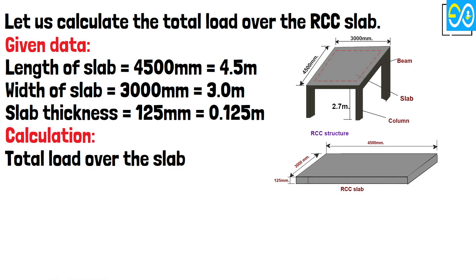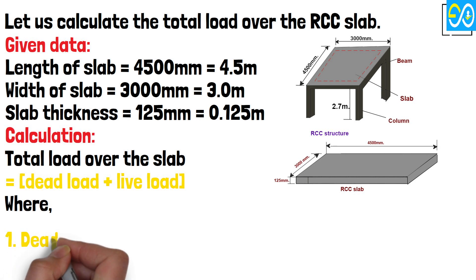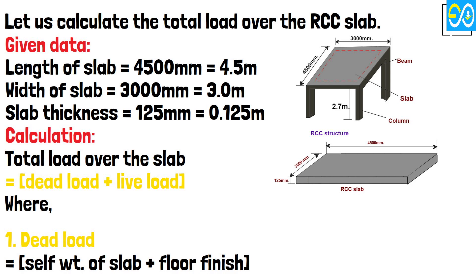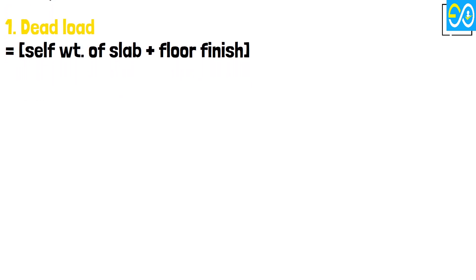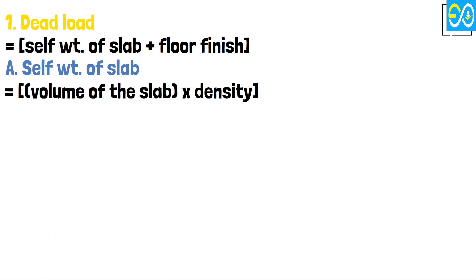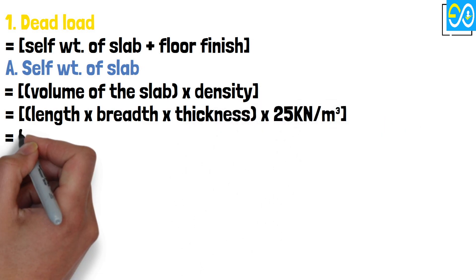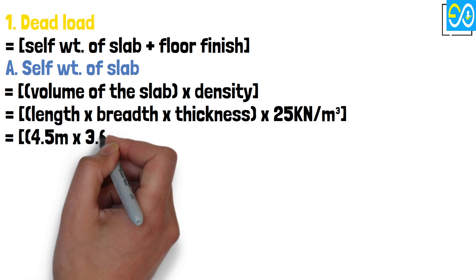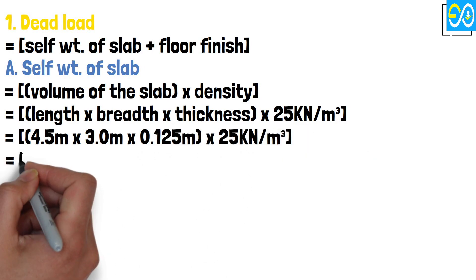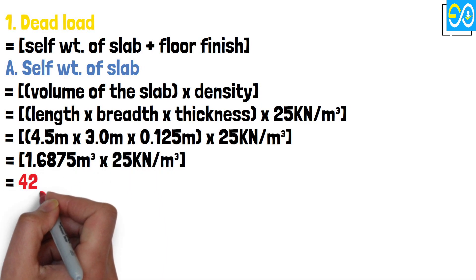Total load over the slab equals dead load plus live load. Dead load equals self-weight of slab plus floor finish. Self-weight of slab equals volume of the slab times density equals length times breadth times thickness times 25 equals 4.5 times 3.0 times 0.125 times 25 equals 1.6875 times 25 equals 42.19 kN.